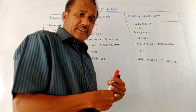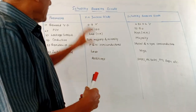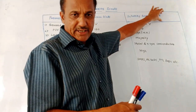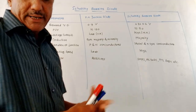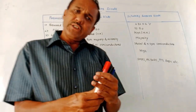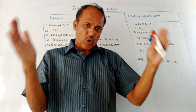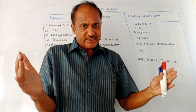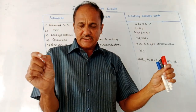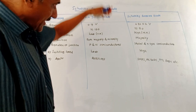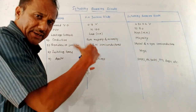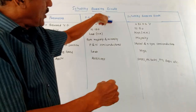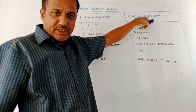Next, let us discuss the comparison between the normal PN Junction Diode and the Schottky Barrier Diode. This is an important part. This chart gives us a comparative analysis between the normal PN Junction Diode and the Schottky Barrier Diode.